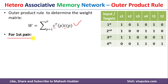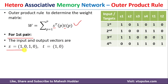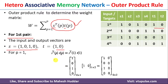We start with the first pair. The input is [1,0,1,0] and the target T1 is [1,0]. For p=1, we compute S-transpose(1) multiplied by T1. S-transpose is a 4×1 matrix and T is a 1×2 matrix, giving a final 4×2 weight matrix. Performing this multiplication gives us the weight matrix for the first input pair.